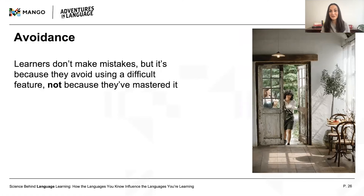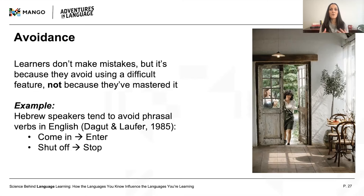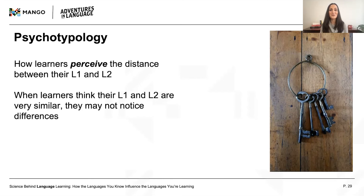Adding to the intrigue of cross-linguistic influences, a lack of mistakes doesn't necessarily mean that a learner has mastered a form. Learners might also choose, consciously or not, to avoid using forms that are different from those in their L1. Language contains a lot of redundancy — different ways to say the same thing. While English speakers tend to use phrasal verbs like 'come in' or 'shut off,' L1 Hebrew speakers, whose first language does not have phrasal verbs, tend to prefer accurate but less common one-word alternatives like 'enter' and 'stop.' While not errors per se, this kind of production does not reflect native speaker usage and is actually evidence of language transfer. Interestingly, how a learner perceives the difference between their L1 and L2 also plays a role in cross-linguistic influence.